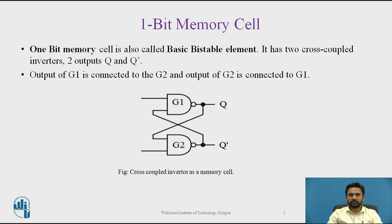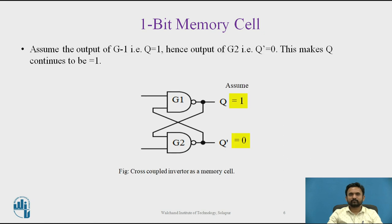The output of G1 is connected to G2 and the output of G2 is connected to G1. Assume the output of G1, that is Q, equals 1. Hence, the output of G2, that is Q-complement, equals 0, and this makes Q continuous to be 1. In the circuit shown here, the NAND gate G1 has at least one of its inputs at logic 0. Therefore, its output Q must be at logic level 1 as per NAND gate principles. Therefore, such a flip-flop circuit is called the set state.